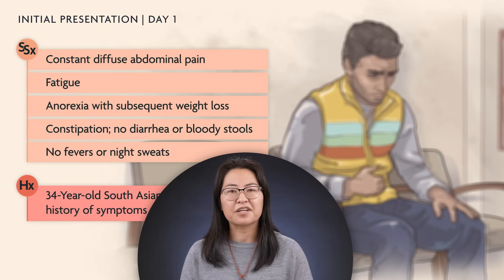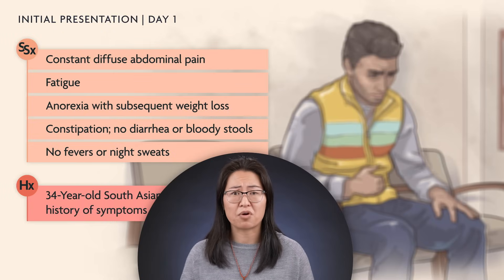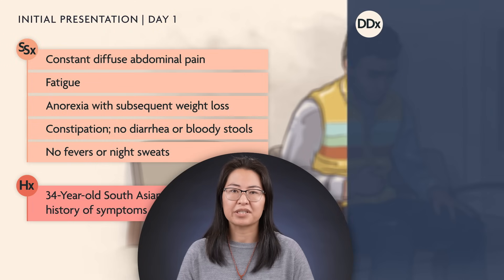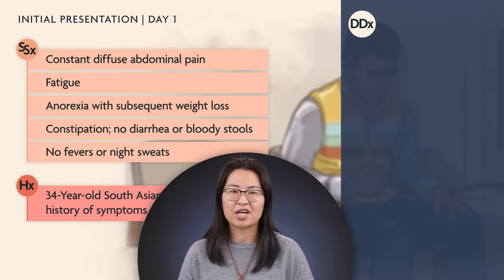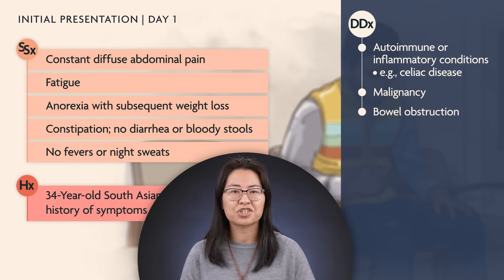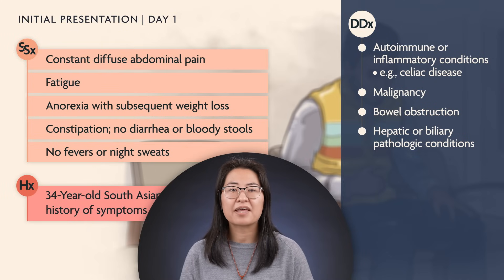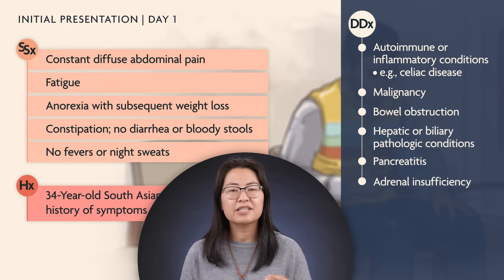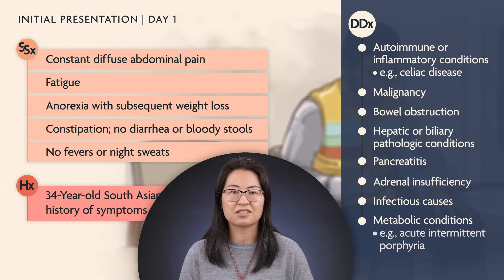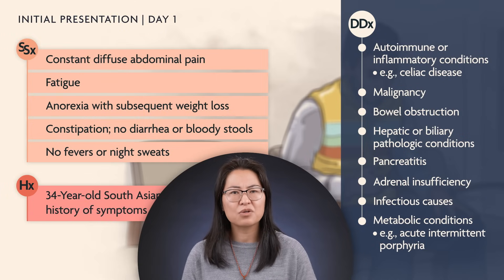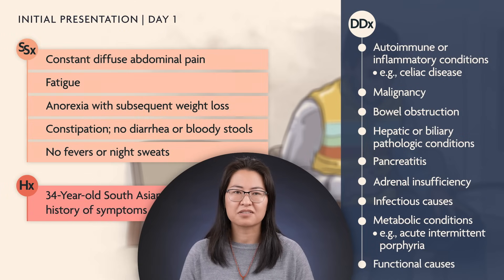The differential diagnosis of subacute diffuse abdominal pain is broad. It includes inflammatory conditions such as celiac disease, malignancy, obstruction, a hepatic or biliary pathologic condition, pancreatitis, adrenal insufficiency, infection, metabolic causes such as acute intermittent porphyria, and, as a diagnosis of exclusion, functional causes.